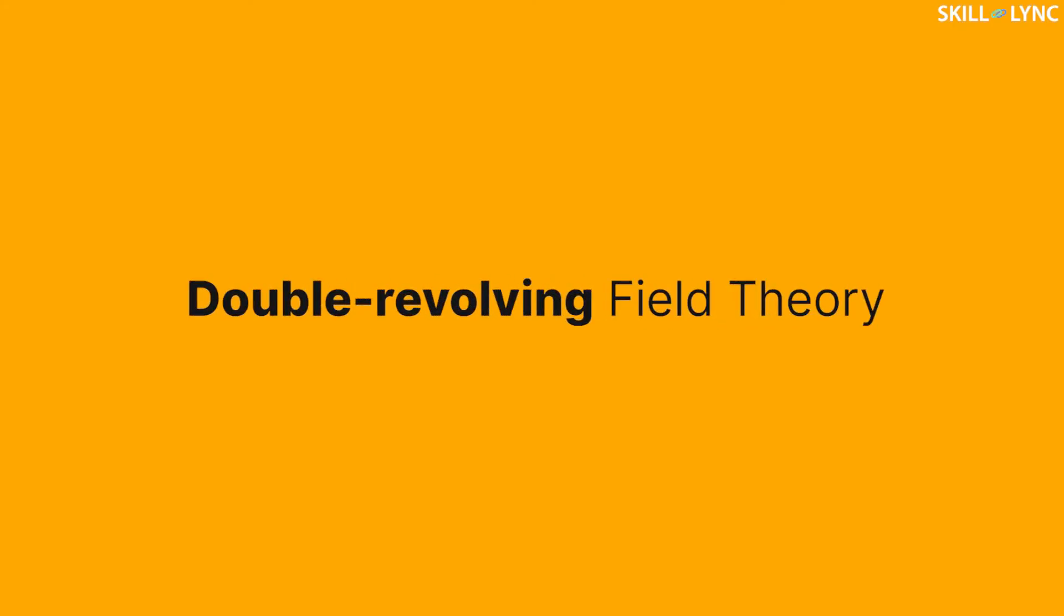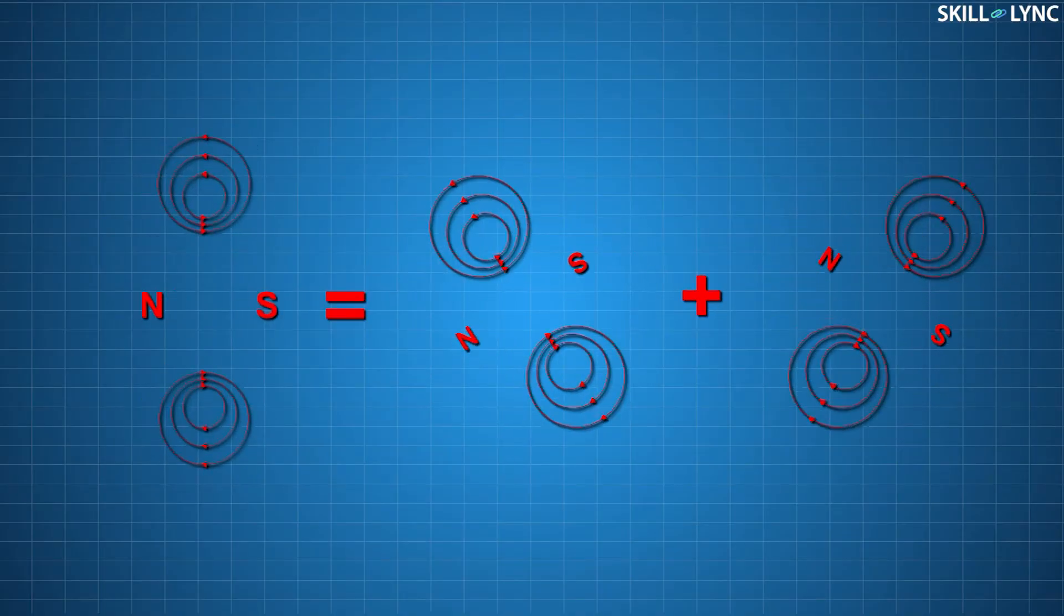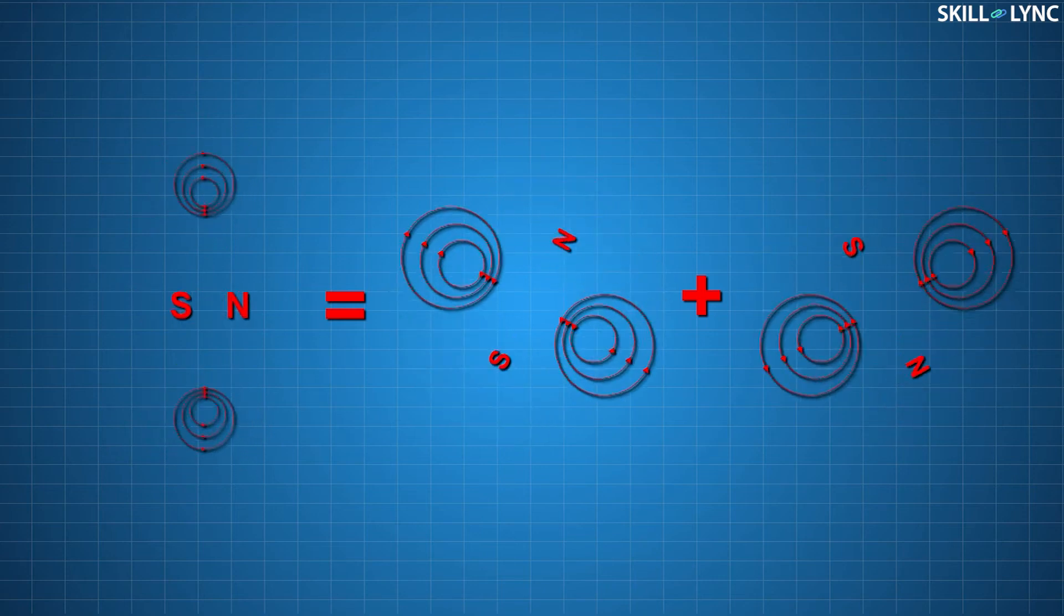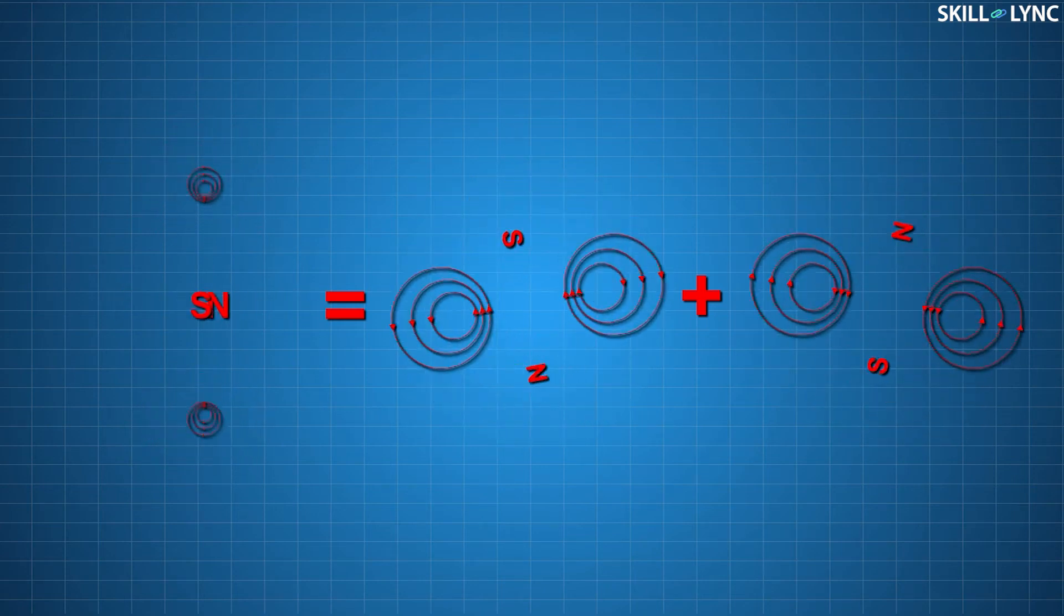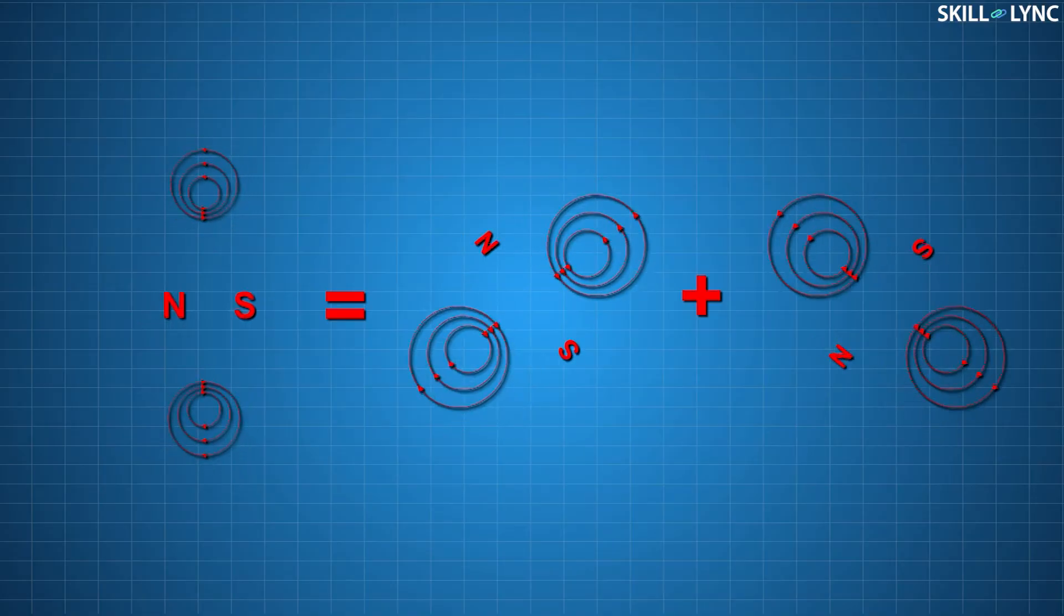The reason why this happens is explained by the double revolving field theory, which states that the alternating magnetic field is a sum of two equal and opposite rotating magnetic fields. The two magnetic fields being equal in magnitude and opposite in direction do not provide the effective torque for the rotation of the rotor.